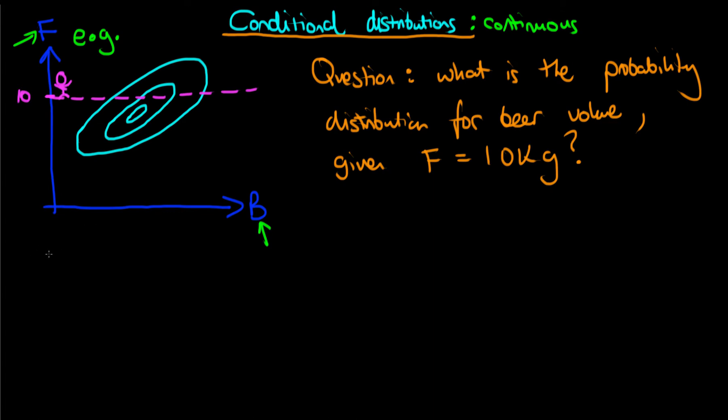So we can imagine walking along and being fairly flat to begin with, and then eventually we reach an area of higher density, which tails off fairly quickly, until when we reach this part of the curve, again, we're relatively low down. And hence, our conditional distribution is also quite low. So this distribution that I've drawn here would be the probability distribution of beer volume, given that F is equal to 10.